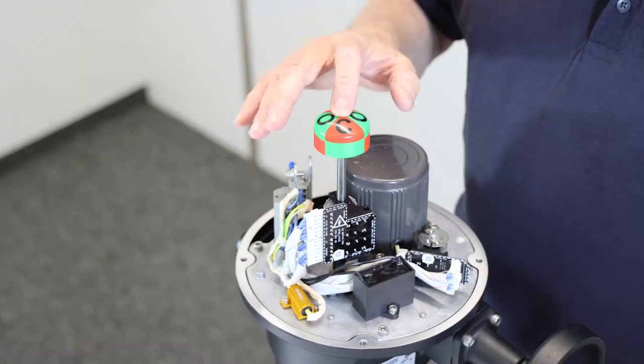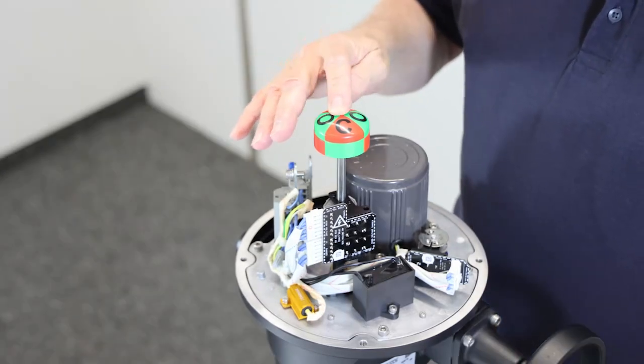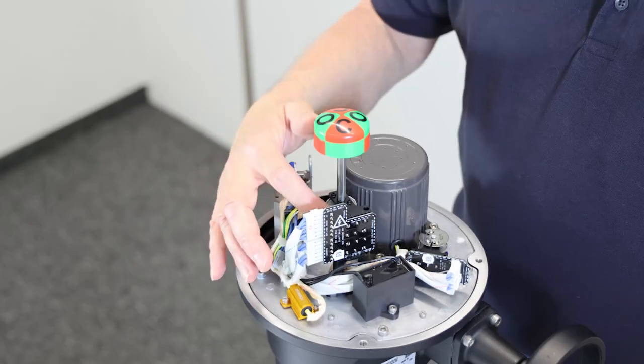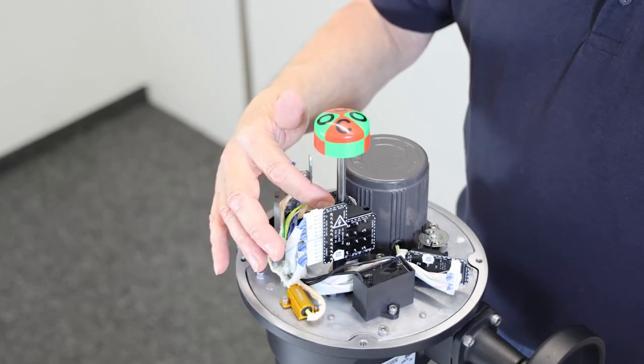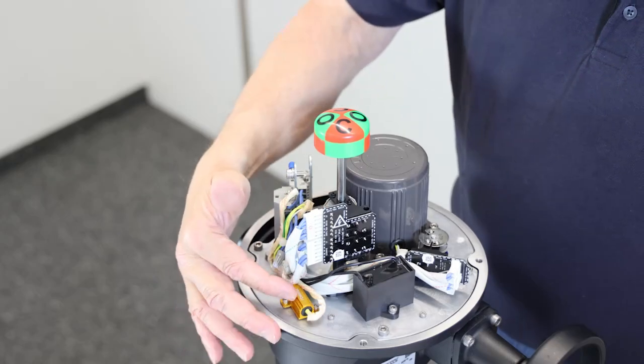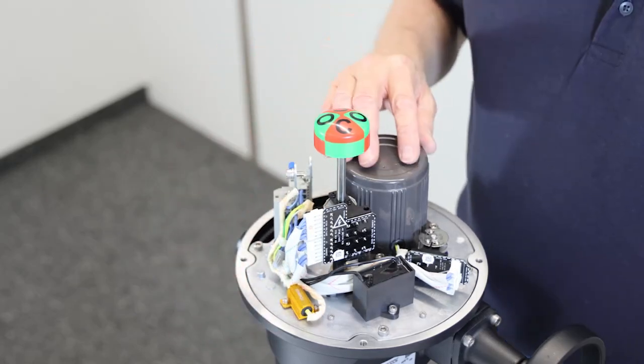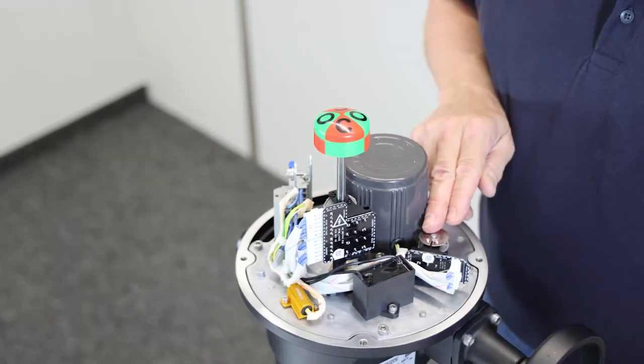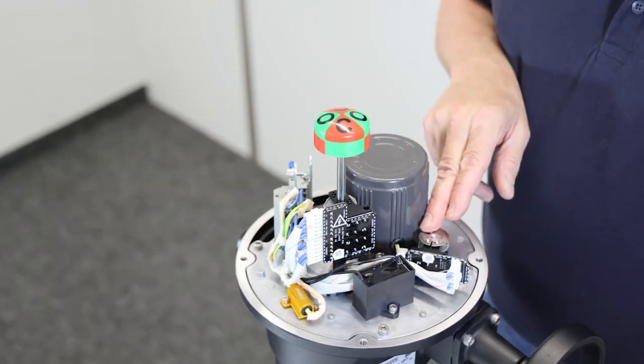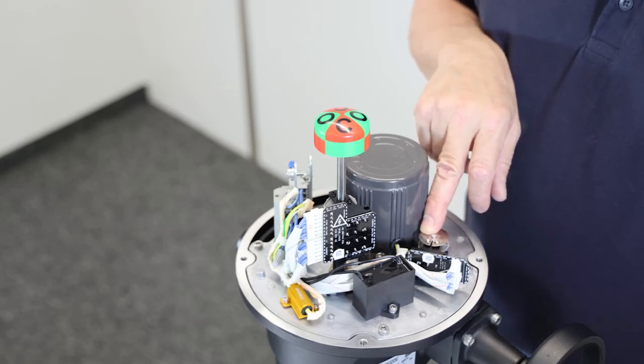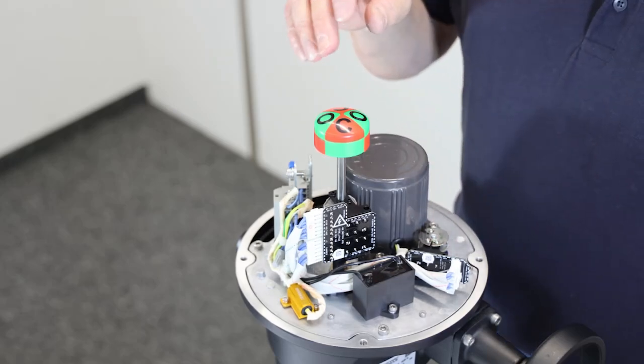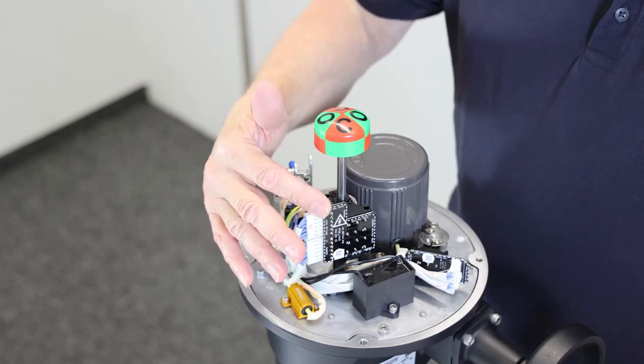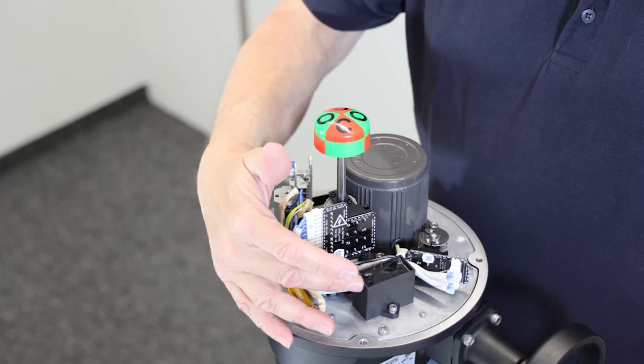We see here the position indicator, the terminal block, the cams, the heating resistance, the motor itself. Then we have the torque limiters available for the larger actuators starting from the AQ25, then the switchboard, and finally the capacitor.